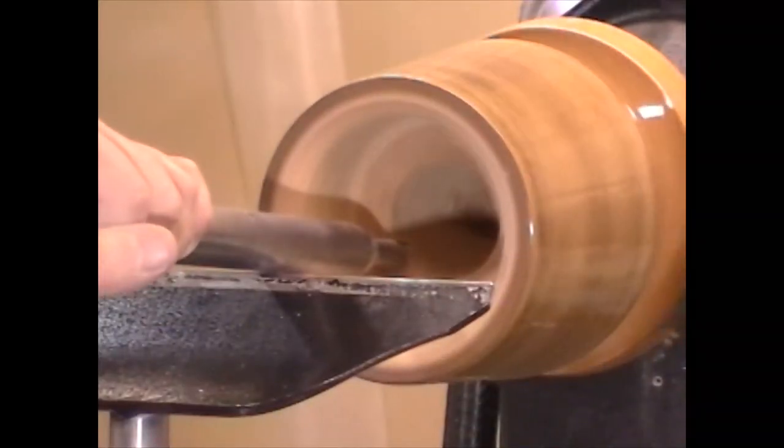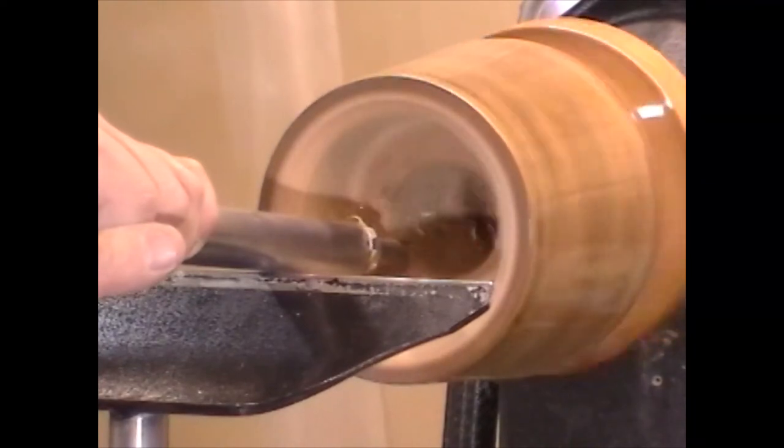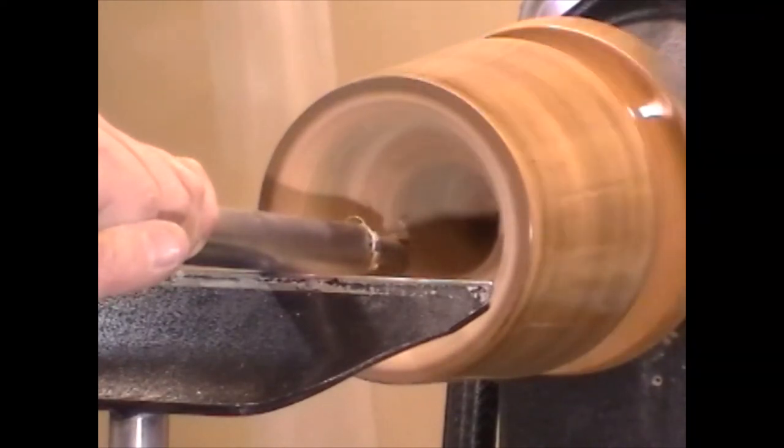Once I'm turning end grain for the rest of the bowl I use my homemade carbide tip scraper to finish the hollowing.